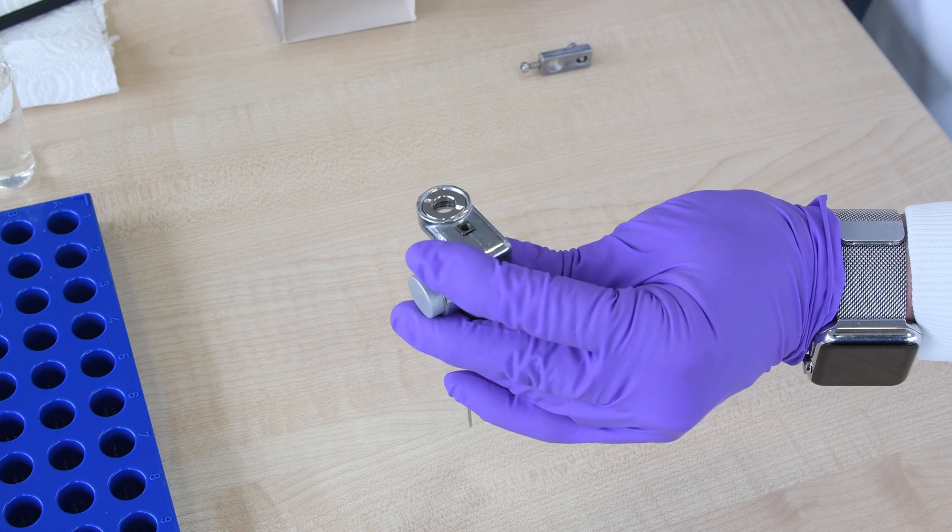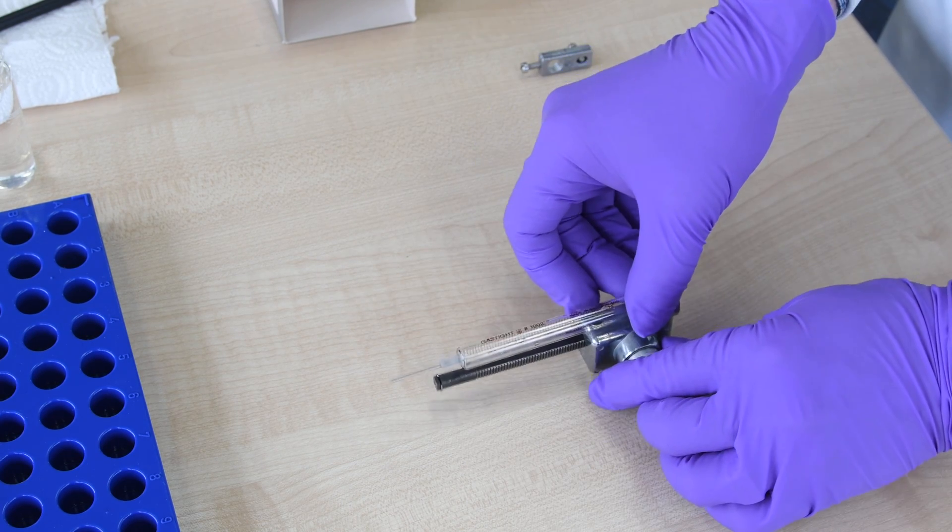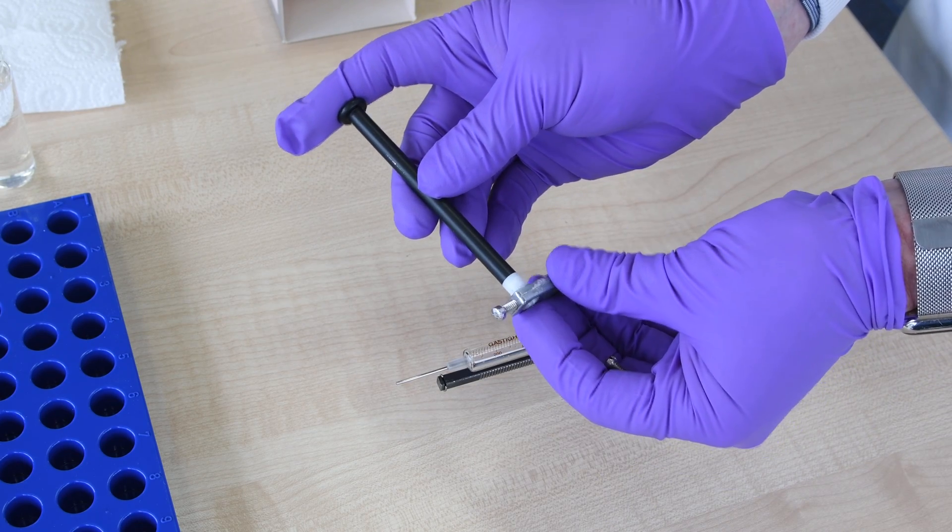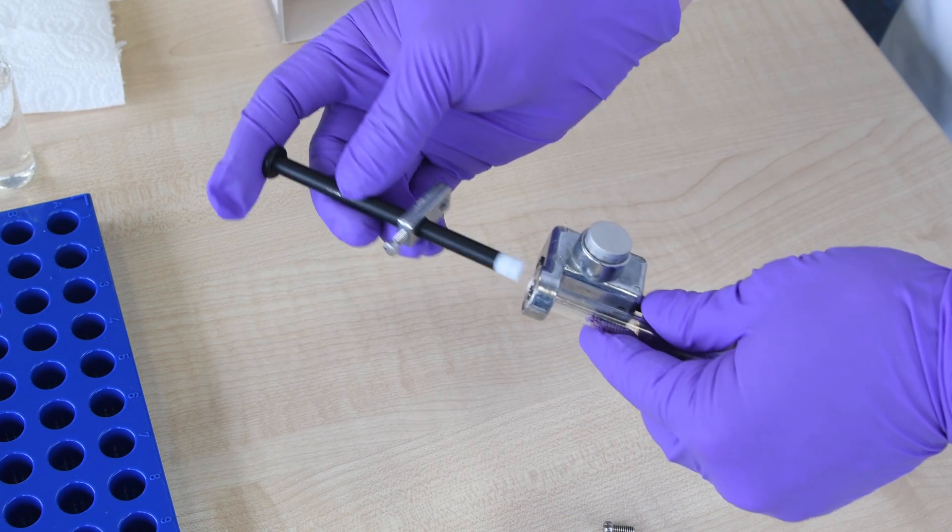Once the syringe is in place, we can now apply the plunger. The plunger goes through a retaining screw.